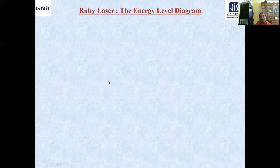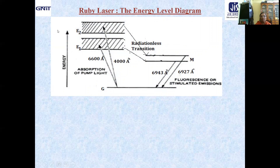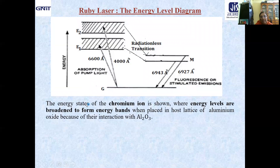Let us now look at the energy level diagram of the ruby laser — more specifically, of the active material chromium. We have G, the ground state, then two excited energy states in the form of energy bands E1 and E2. These appear as bands because the energy states of the chromium ion interact with the lattice of the aluminium oxide host crystal.